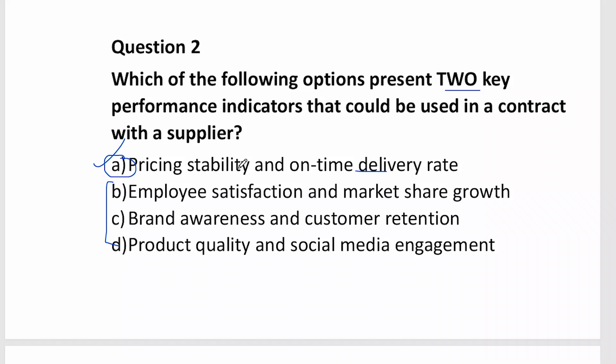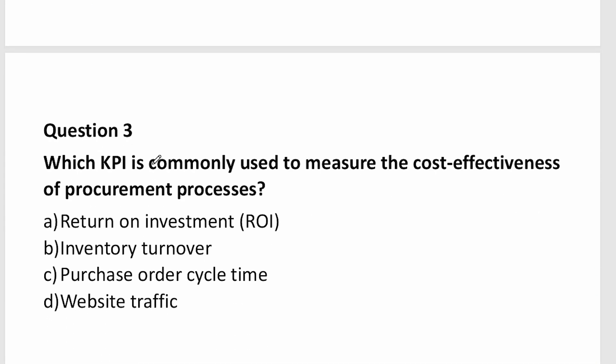Sometimes they test whether you know where a KPI can be applied — for example, KPIs can be used in testing customer satisfaction with rate scores, or employee satisfaction. Another exam question: 'Which KPI is commonly used to measure the effectiveness of a procurement process?' Options might include return on investment, inventory turnover, purchase order cycle time, or web traffic.